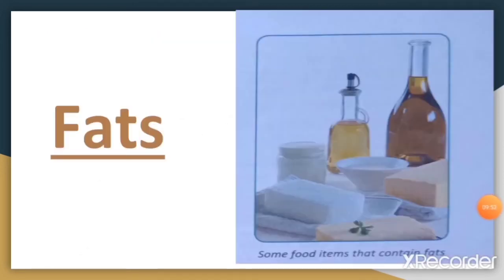Food items such as nuts, oil, ghee and butter are rich in fats. They provide more energy than food items rich in carbohydrates. They also help to keep the body warm. Our body needs very little fat, and extra fat is stored in the body for later use.